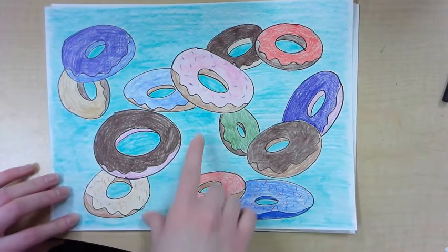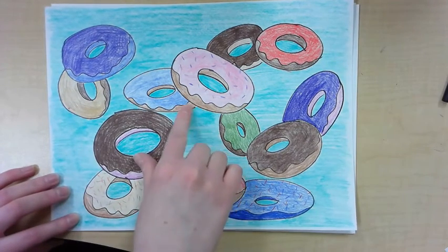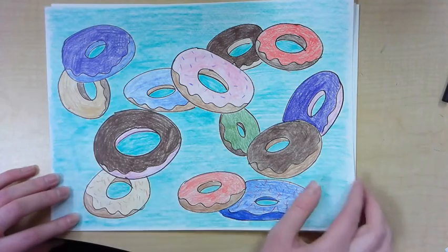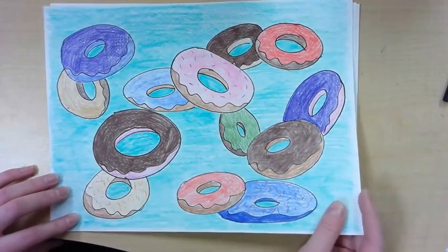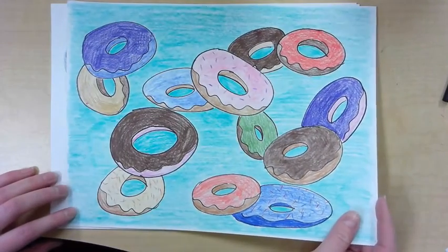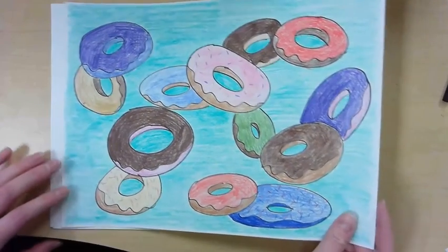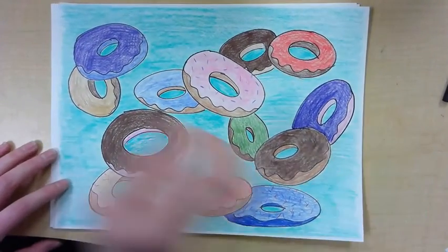So strawberry flavor, regular cake donut, chocolate, blueberry. And you can also add sprinkles to some of your doughnuts if you want to add those details. While you are working on coloring, I'm going to play a story about a doughnut named Arnie.